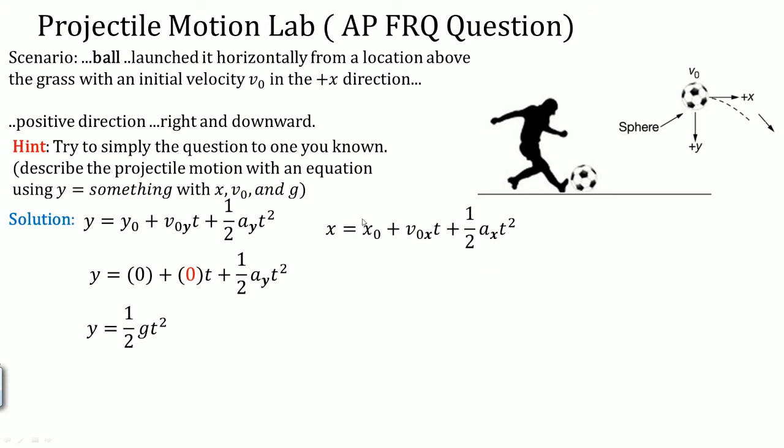I'm going to be using the x version of the quadratic equation for kinematics. I see that the starting x value goes to zero and the acceleration in the x value goes to zero, because it starts from zero and there is no acceleration in the x direction. Simplified, x is equal to the initial velocity in the x direction times time.